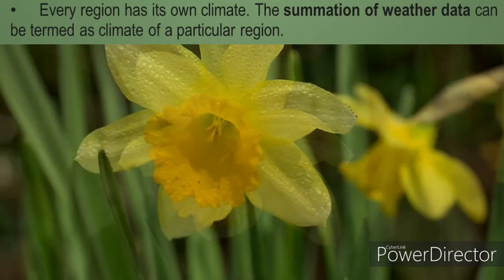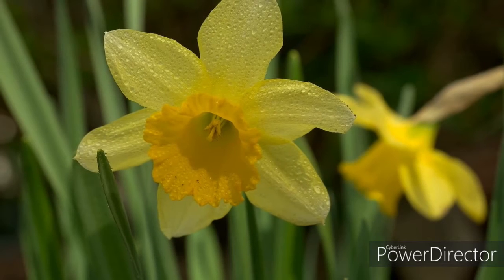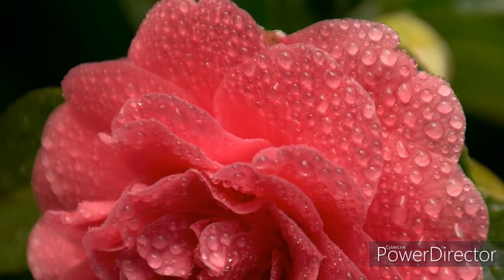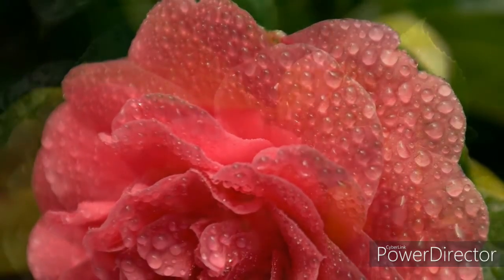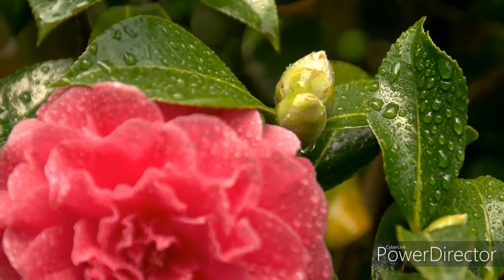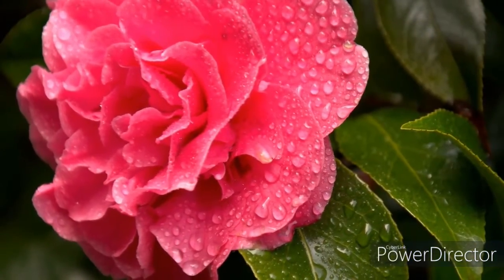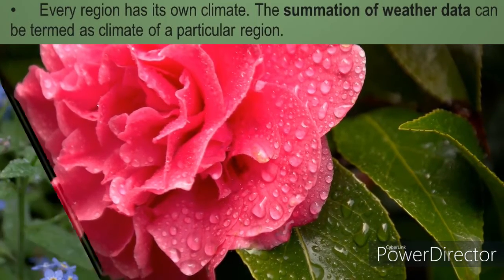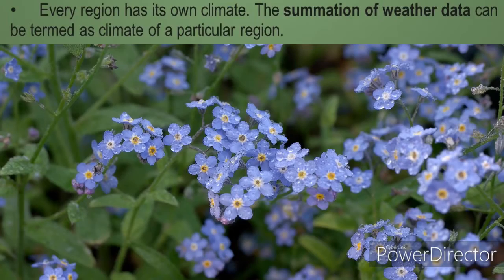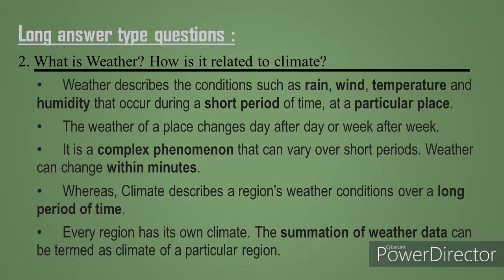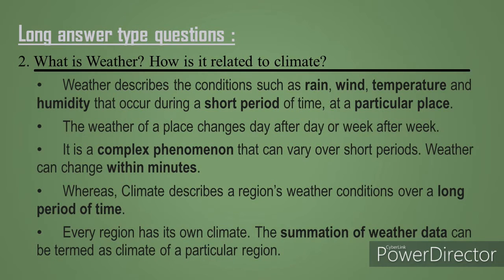Climate happens over a few weeks or months, and every region has its own climate. For example, north India has one climate, south India another — Tamilnadu, Kerala, Jammu and Kashmir each have their own climate. The summation, meaning a collection of weather data put together, is called climate. That is the answer for what is weather and how it is related to climate.